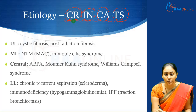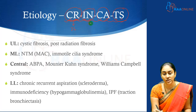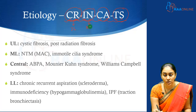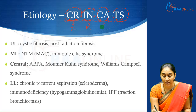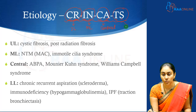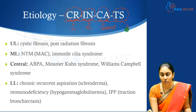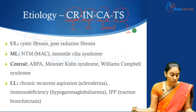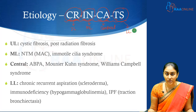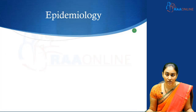To summarize: CR — cystic fibrosis and radiation fibrosis — can cause upper lobe bronchiectasis. INN — non-tuberculous mycobacteria and immotile cilia syndrome — can cause middle lobe bronchiectasis. CNA — various congenital syndromes and ABPA (allergic bronchopulmonary aspergillosis) — can cause central bronchiectasis. And TNS — scleroderma and traction bronchiectasis typically observed in idiopathic pulmonary fibrosis — are important causes of lower lobe bronchiectasis. This is a good mnemonic to remember the different causes based on where they cause the bronchiectasis.